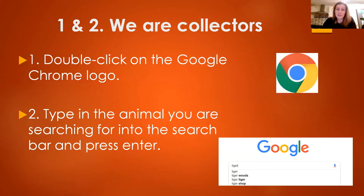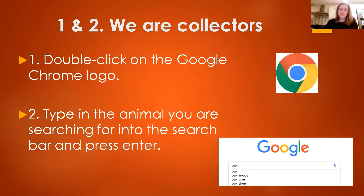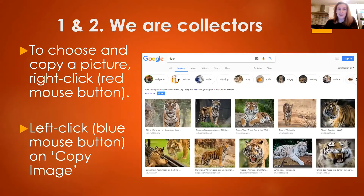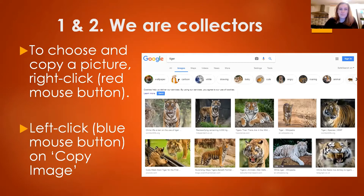Once you open up your search engine, type in the animal you're searching for into the search bar and press Enter. On this PowerPoint I've typed in 'tiger.' Once you press Enter, Google will search for all the pictures it can find containing a tiger. Here we are — I've searched and found all of these pictures. Some are showing their teeth, some are lying down, some are little cubs. We're going to choose one, copy it, and paste it into a PowerPoint.